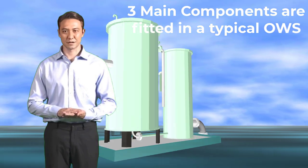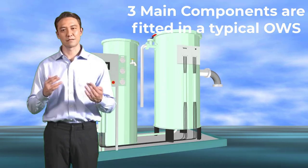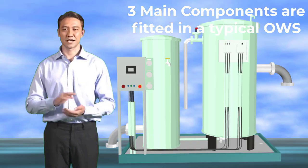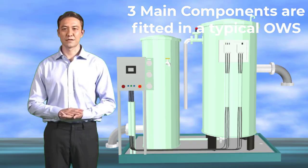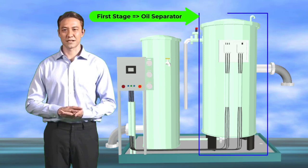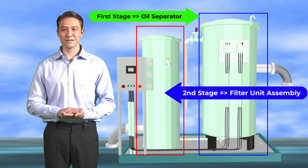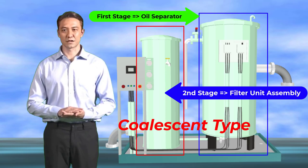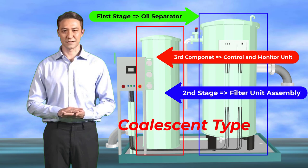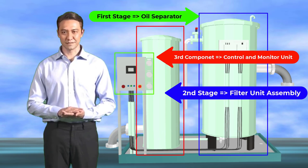The components of an oily water separator consist of three main parts. The first stage is the separator unit assembly. The second stage is the filter — depending on the design of the maker; for example, a coalescent filter unit is used. And the third component is the controlling unit and monitor consoles.